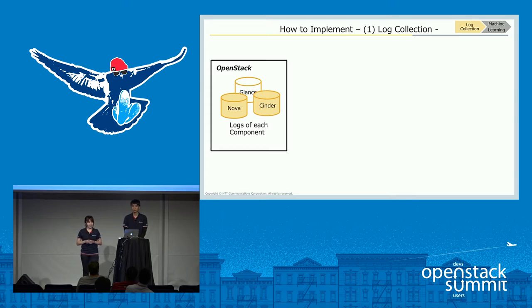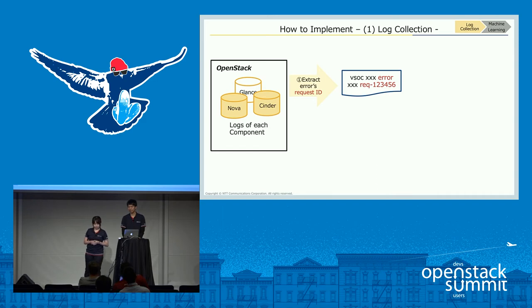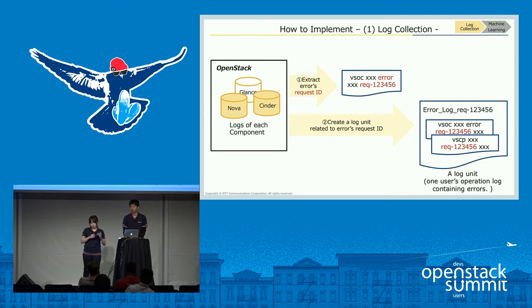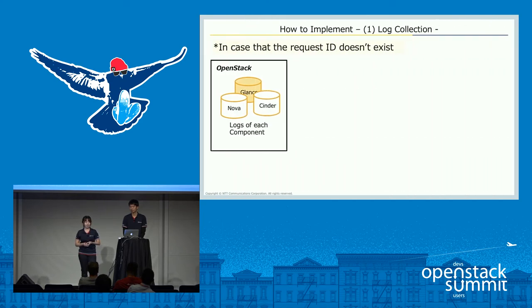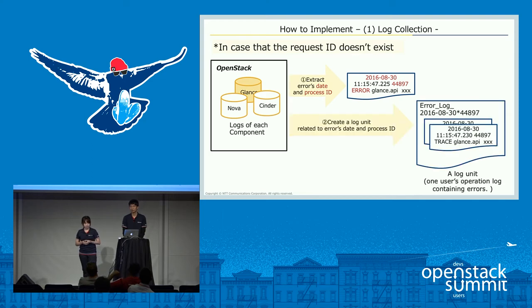The first main part is log collection. The system collects logs of each component — Nova, Cinder, and Glance — and creates a log unit. First, we get error sentences and extract request IDs. Then we retrieve logs related to those request IDs and create a unit — one user operation log containing an error. Sometimes request IDs don't exist; for example, in Glance in our environment, we use process ID as an alternative. We extract the date and process ID from error sentences to create the log unit.